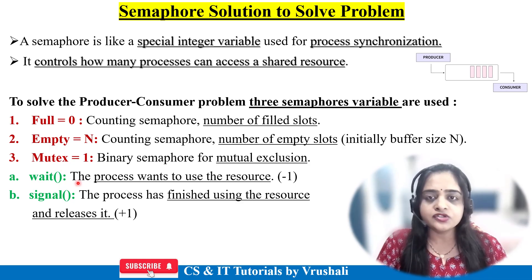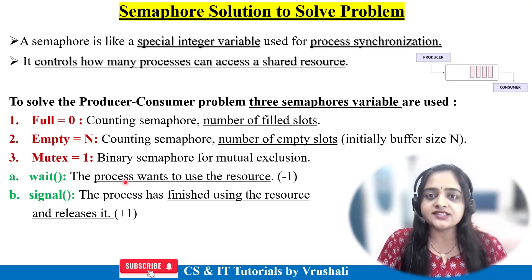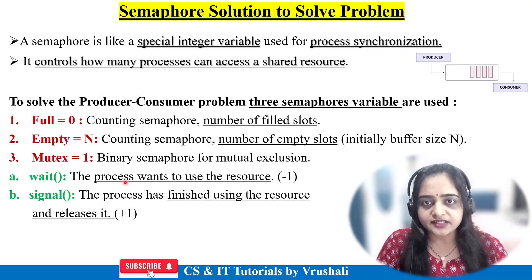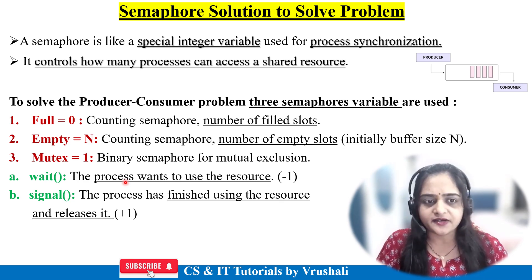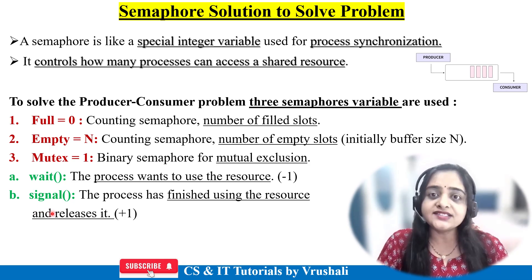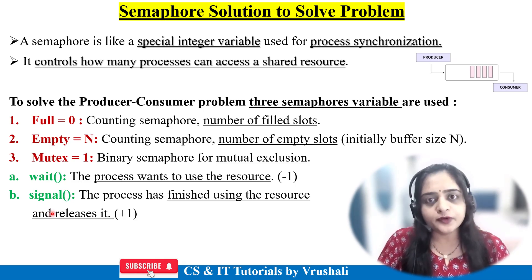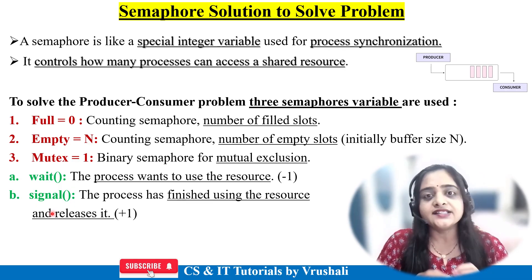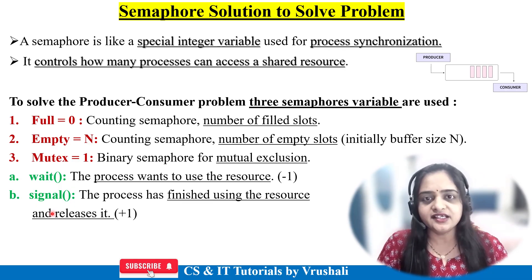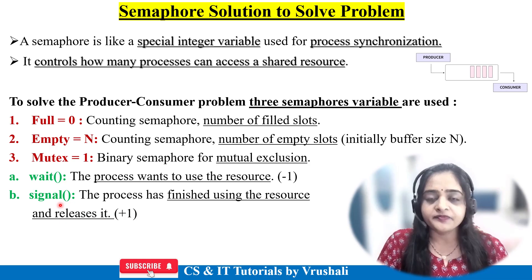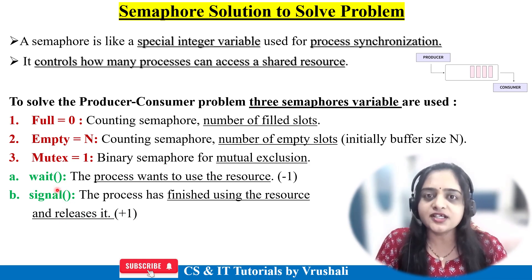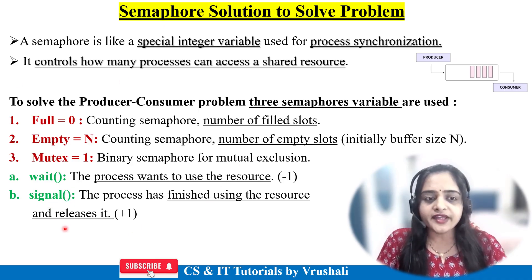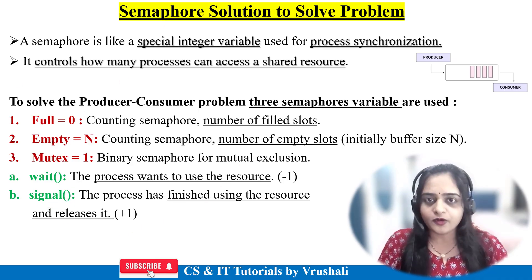For that purpose two functions are used: wait and signal. The wait function means a particular process is using the buffer — they hold the buffer to produce or consume data. The signal function means releasing the resource — the producer produces the data and after completion, releases the buffer. Basically, wait means use the buffer and signal means release the buffer. These are all the variables used while solving this particular problem.